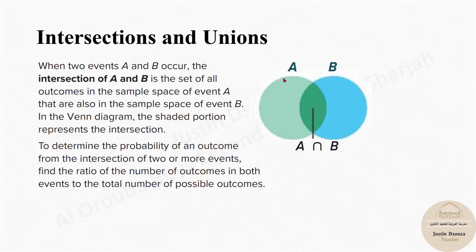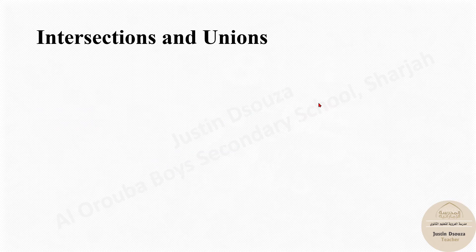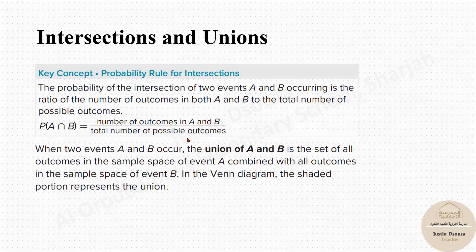If there is something in A and B — say 1, 2, 3 is in A and 3, 4, 5 is in B — then you can see 3 will be the overlapping section, that is the intersection. The formula for the probability of A intersection B is basically the number of outcomes in both — the overlapping of A and B — divided by the total possible outcomes. When we look into a problem, it will be much clearer.